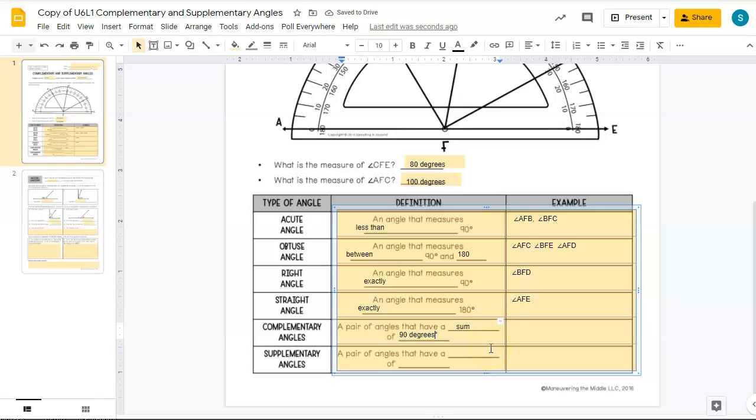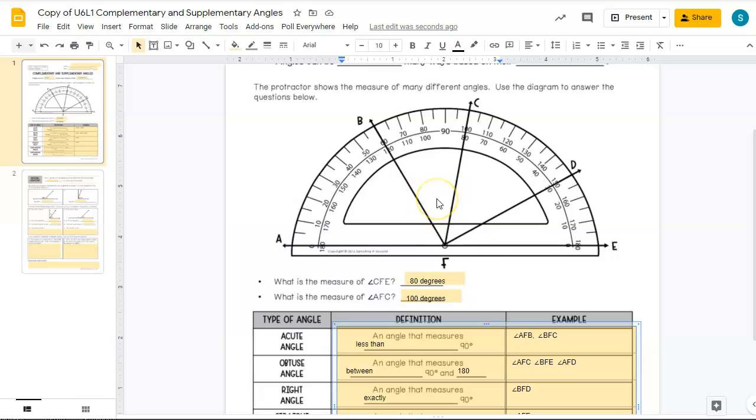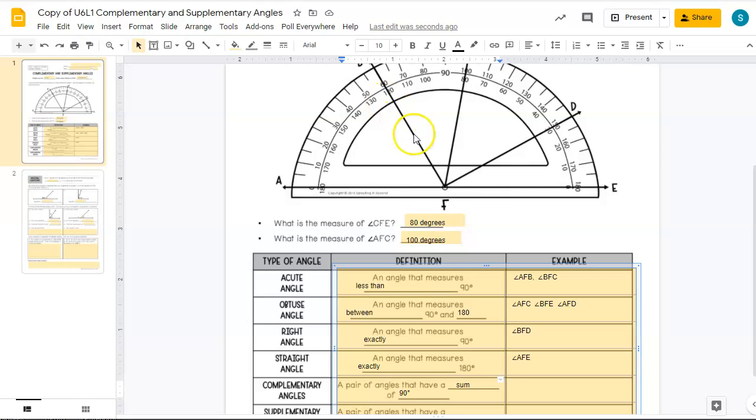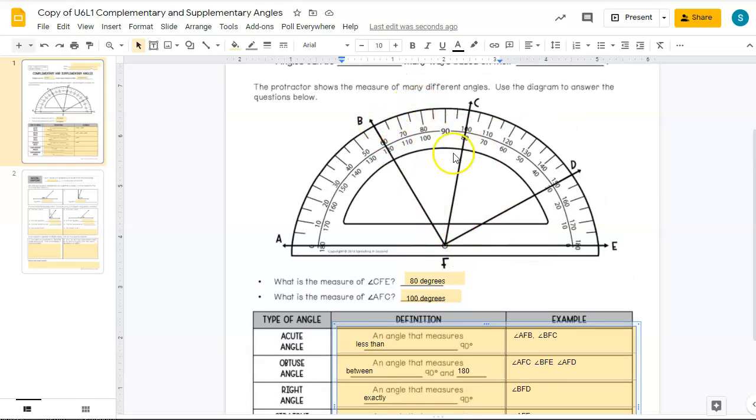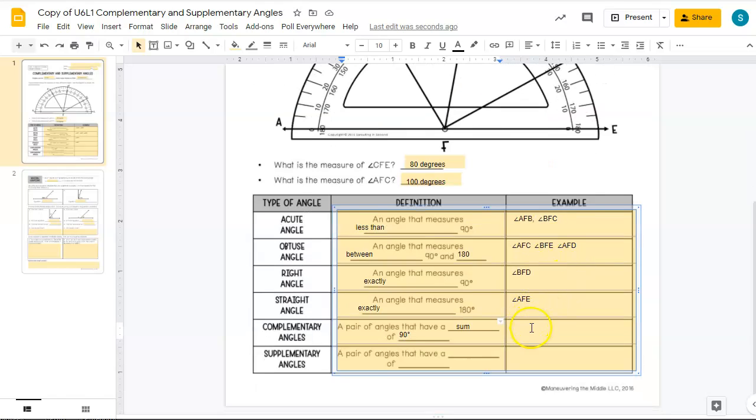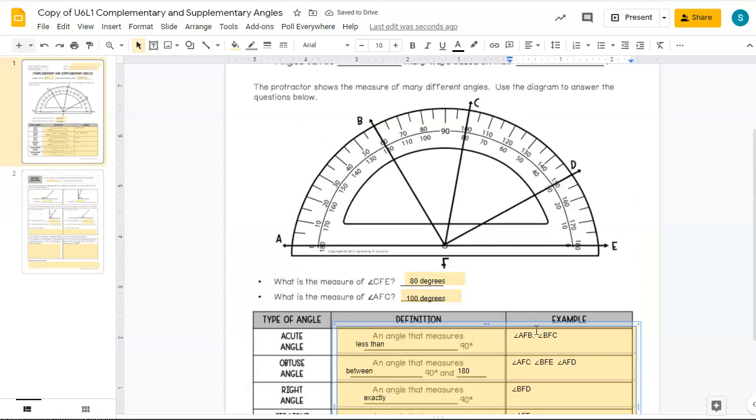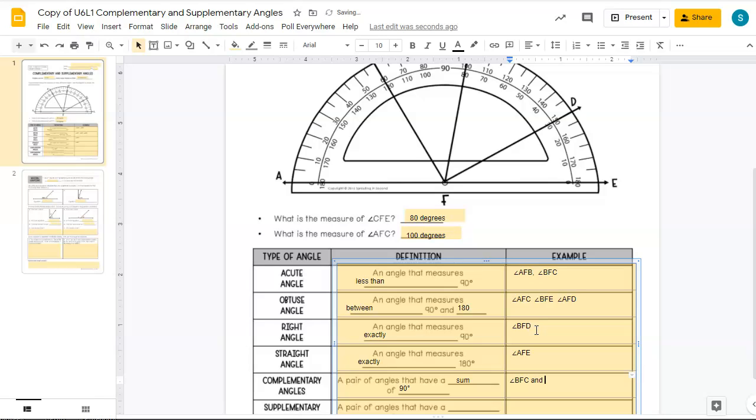But these two new phrases, complementary and supplementary, which you'll notice are important because they're literally the title of today's lesson, focus on a pair of angles, and it shows how they're related. So a pair of angles that have a sum of 90 degrees. That means that the measure of the two angles adds up to 90 degrees. So in our case, we've got our pair of angles that add up to 90. It's angle BFC and angle CFD.